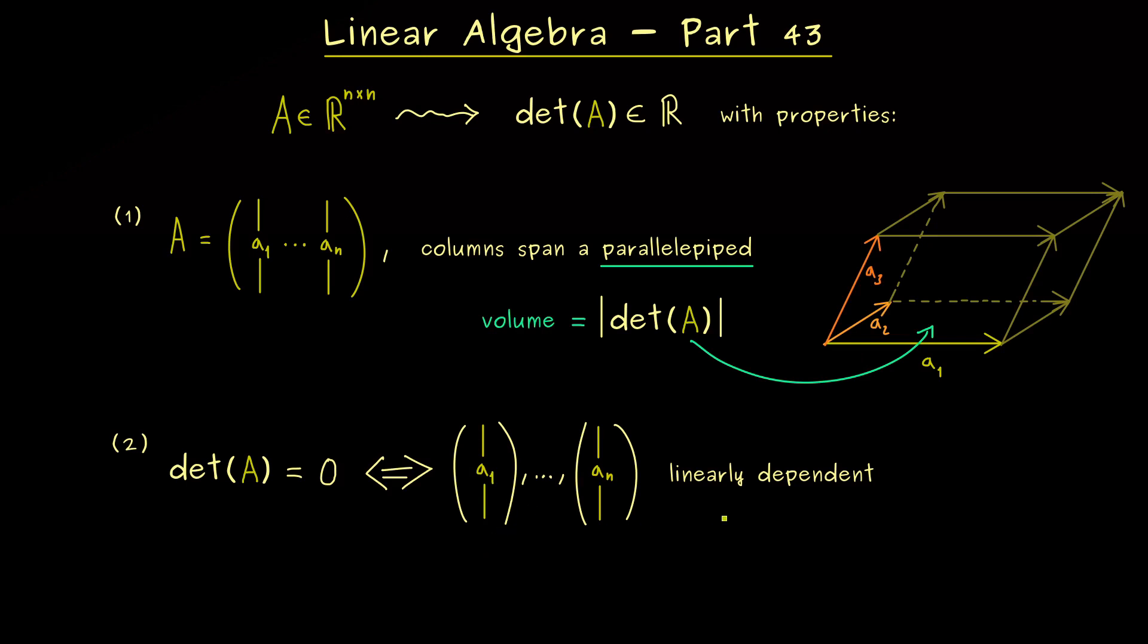However, now we also see that linearly dependent vectors in the columns of A means that the matrix A is not invertible. Therefore, the determinant gives us the correct explanation if a matrix is invertible.